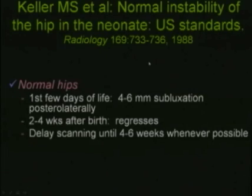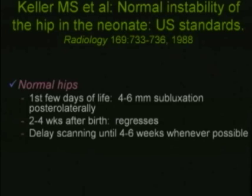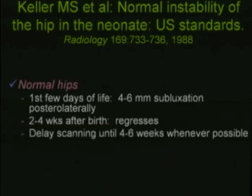In the first four days of life there is normally about four to six millimeters of subluxation because of the estrogen effect on the joint capsule and cartilage, so these structures are soft and loose. This phenomenon regresses around two to four weeks after birth. Ideally, it would be best to delay scanning in babies suspected of needing sonography due to risk factors until about four to six weeks, though guidelines indicate after three weeks is appropriate.